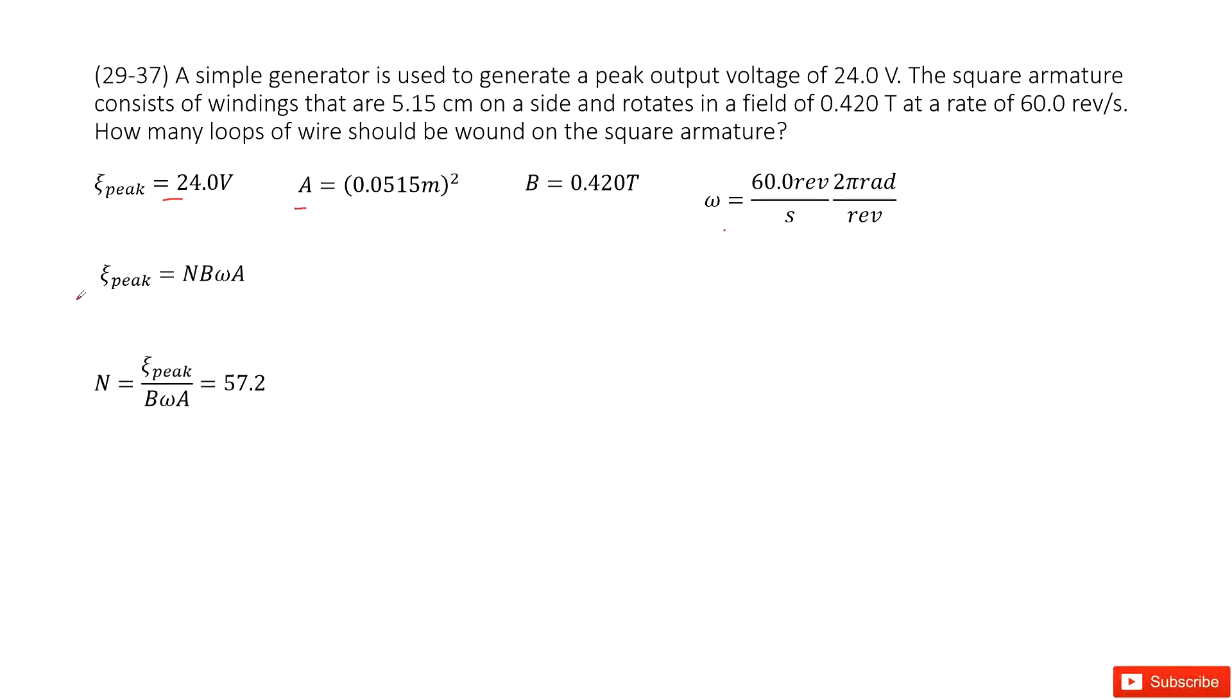And as we learned in our textbook, the peak output voltage for this generator can be written as N B omega times A. And then we can write the function for N, how many turns for this generator. Input all the given quantities, you can get the answer there.